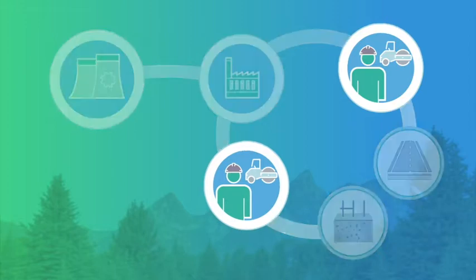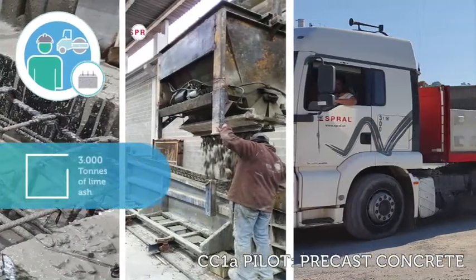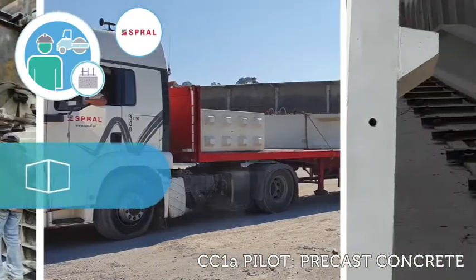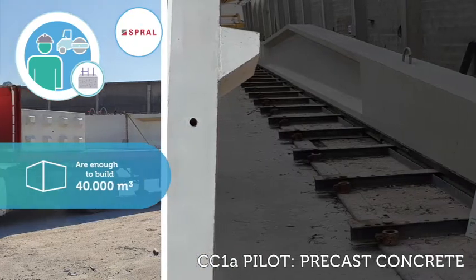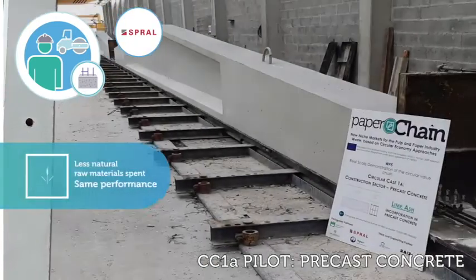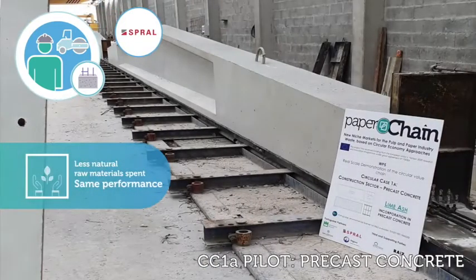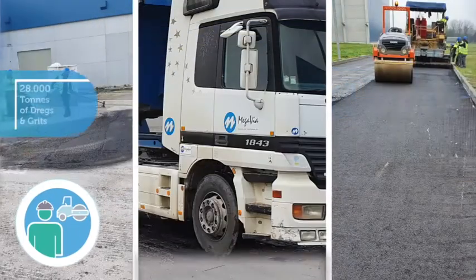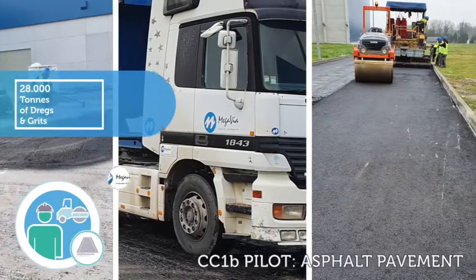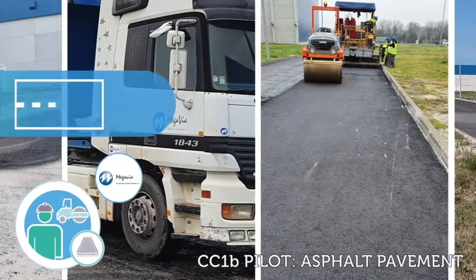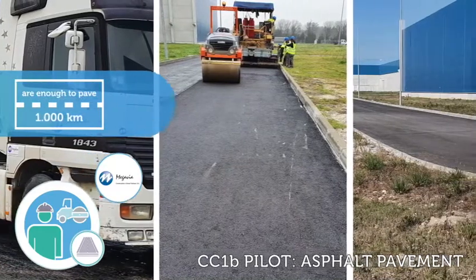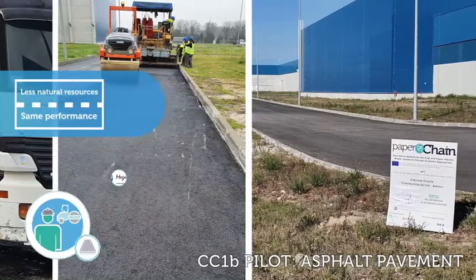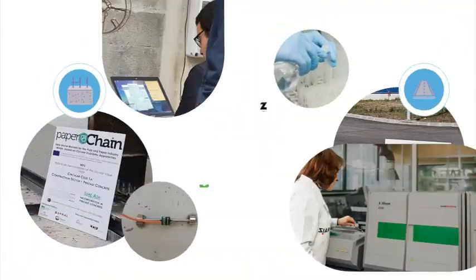The project has launched two pilots: an industrial pavilion using the new pre-fabricated concrete, and a road section where the asphalt pavement includes a mixture of dregs and grits, partially replacing natural aggregates. Both demos are being monitored to test the performance of the new materials.